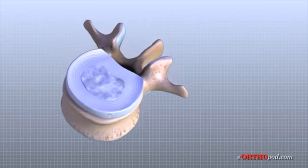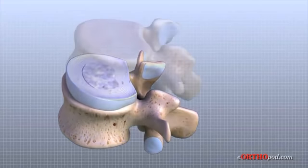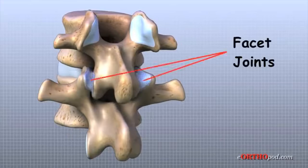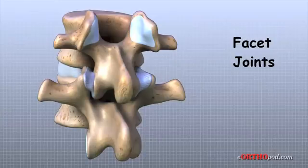Between the vertebrae of each spinal segment are two facet joints. The facet joints are located on the back of the spinal column. There are two facet joints between each pair of vertebrae, one on each side of the spine.